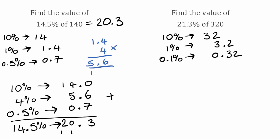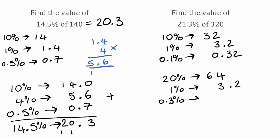Now I'm going to find multiples of these percentages to make up 21.3%. We need 20%, which we find by multiplying our 10% by 2: 32 times 2 is 64. For the units we need 1%, which we've already got — that's 3.2. Finally we need 0.3%. We know 0.1% is 0.32, so we multiply that by 3: 2 times 3 is 6, 3 times 3 is 9, and 3 times 0 is 0 — so 0.3% is equivalent to 0.96.